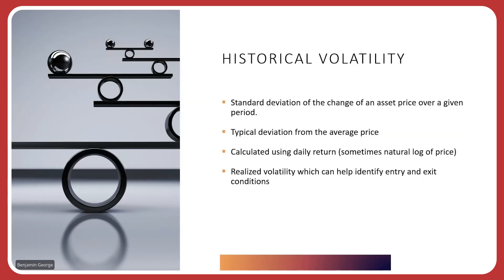First the basics: what is historical volatility? Historical volatility is simply the standard deviation of the change of an asset price over a given period — basically the typical deviation from the average price. You can use daily return or minutely return depending on your bar resolution, and calculate a percent daily return or the natural log of today's price over yesterday's price. Realized volatility can help identify entries and exits: if historical volatility is significantly higher than in the past, that may be a good entry signal, or if it's gone down, the price may have stabilized and it could be time to exit.